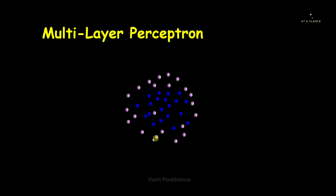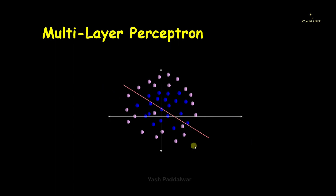Here we can see certain data points arranged in two classes — pink circles and blue circles. The pink circles are covering the blue circles in between, arranged in a two-dimensional structure. Each data point is represented by an x and y coordinate. If we draw a classifier using a single perceptron, it cannot separate these two classes, and accuracy will be no more than 50 percent.